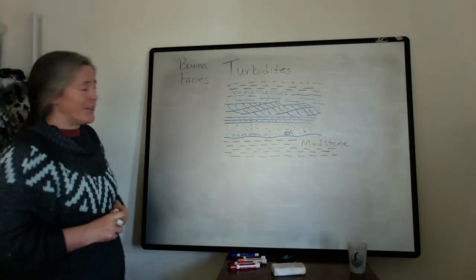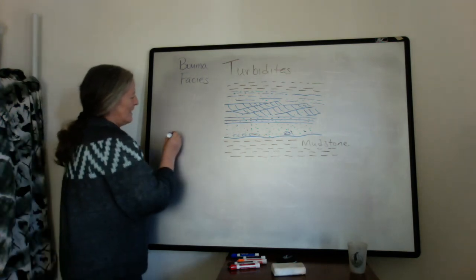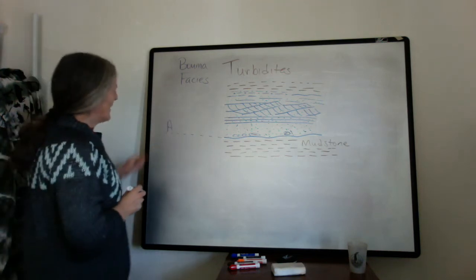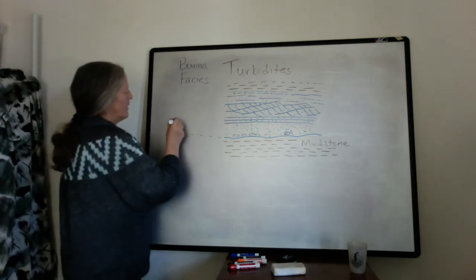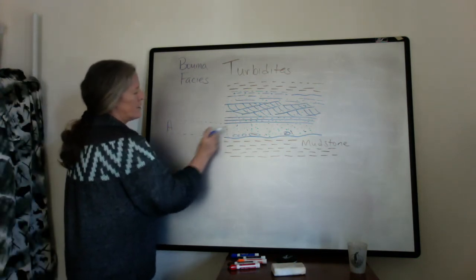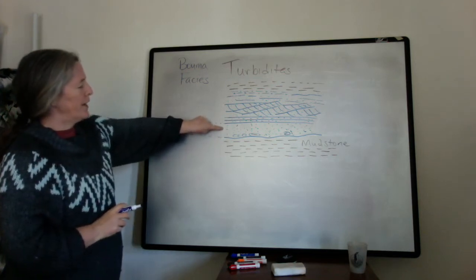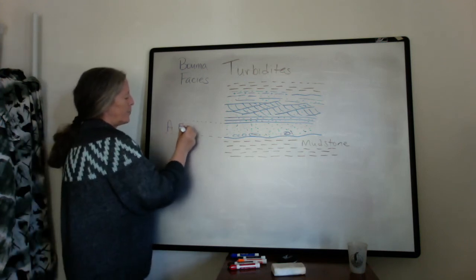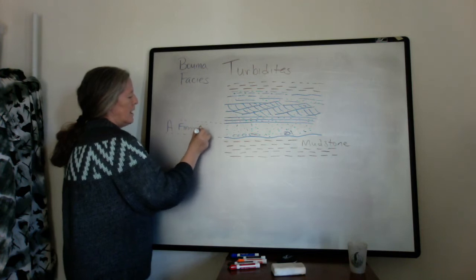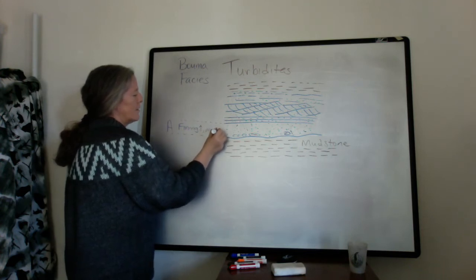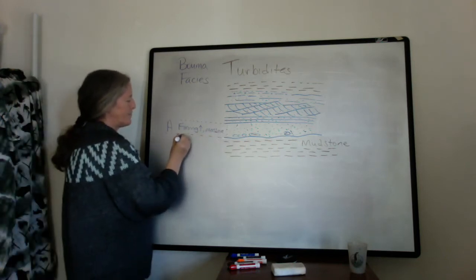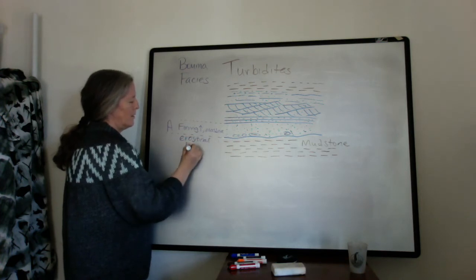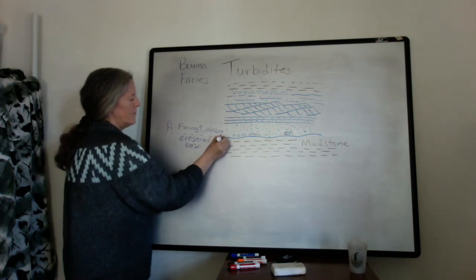Bouma was not very creative with his names — he used A, B, C, D, and E. The Bouma A part is the lower part where you have a fining upward of grains but no sedimentary structures. So this part is fining upward and massive. It often has an erosional base.